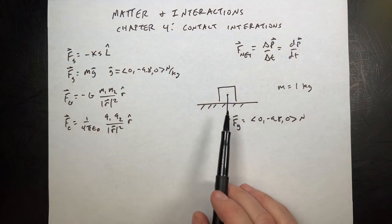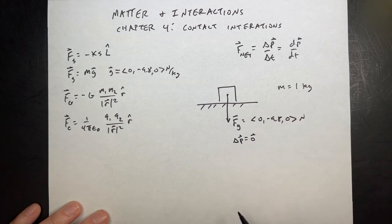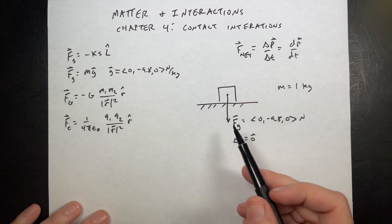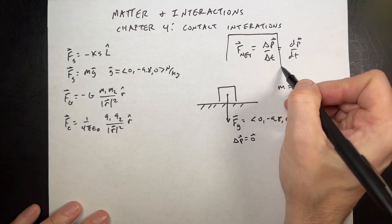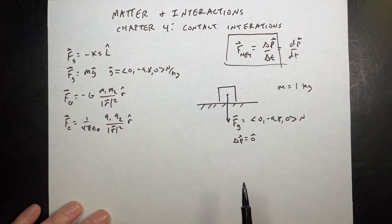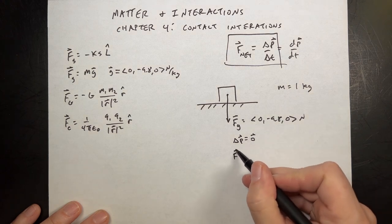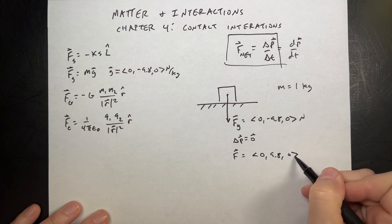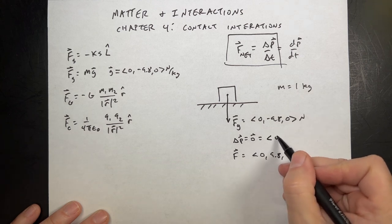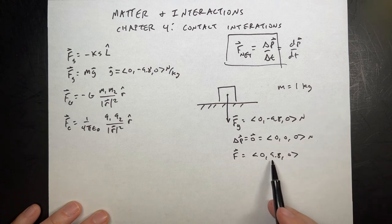If the block is just sitting there, then I know ΔP is equal to zero — the change in momentum is zero. It has to be; it's just sitting there. If the change in momentum is zero, then the net force has to be zero according to the Momentum Principle. So that means there has to be some force pushing up with a value of F = (0, 9.8, 0), so that when I add these two together I get the zero vector, (0, 0, 0) newtons.